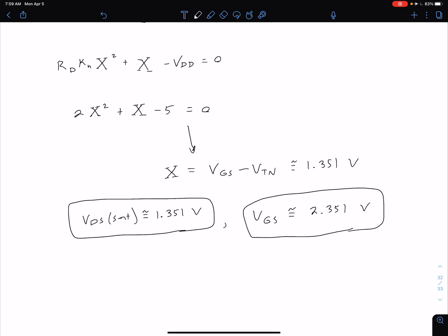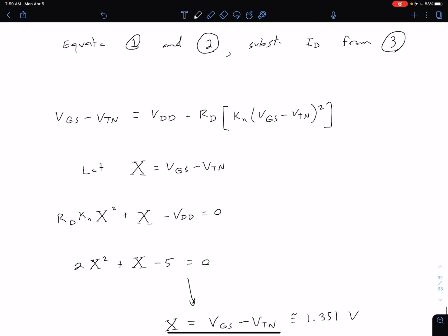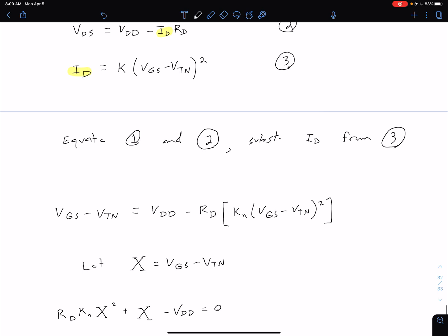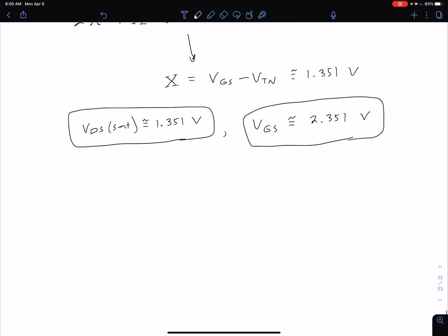Finally, to get our drain current, we just go back to our drain current expression we had in equation three. We can say that our drain current ID is approximately equal to 0.1 milliamps per volt squared times our 1.351, because that's our VGS minus VTN squared. So we get that this drain current is approximately 0.182 milliamps.